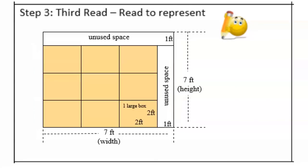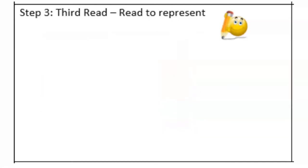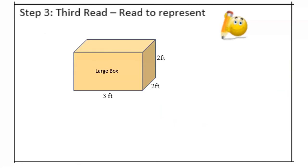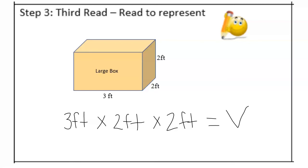Next, I need to determine how many layers of boxes I can stack based on the height of the truck. This representation shows the view of the layers of the truck, labeled with the width of the truck at 7 feet and the height of the truck at 7 feet. We can also see that the width and height of the large box are shown. Once we have figured out how many boxes can fit on the truck, we will need to figure out the combined volume of those boxes. I know that I can find the volume of one box by using the formula length times width times height, so I can do 3 feet times 2 feet times 2 feet to determine the volume of one large box.